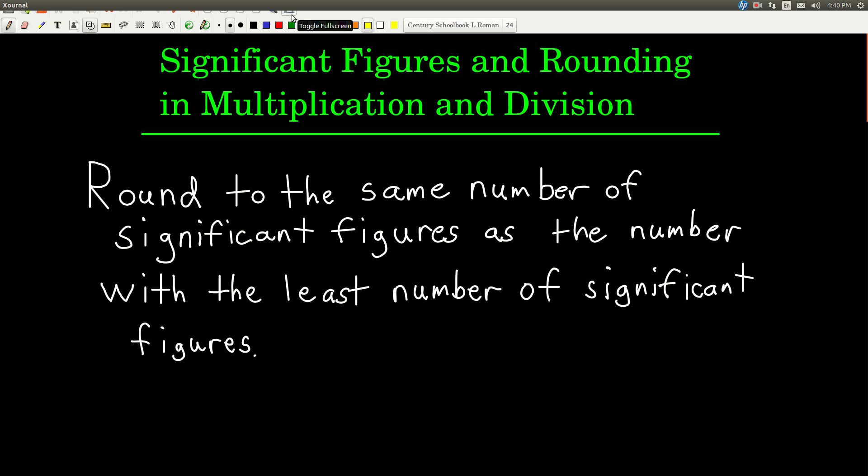Notice the difference between this and when we round with addition and subtraction. There, we don't care about how many sig figs there are, but really what we care about in addition and subtraction is where the last sig fig is. Whereas in multiplication and division, we care about how many. So remember, multiplication and division, it's how many. Addition and subtraction, it's where the last sig fig is.